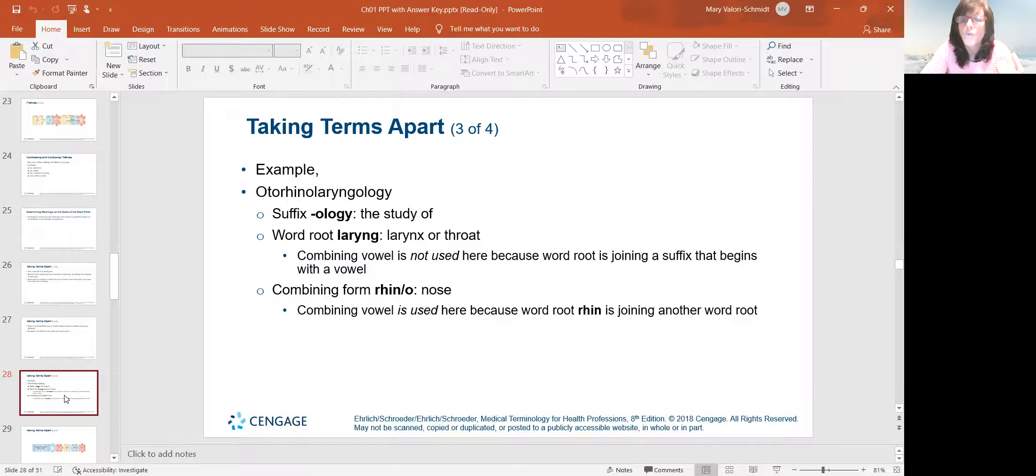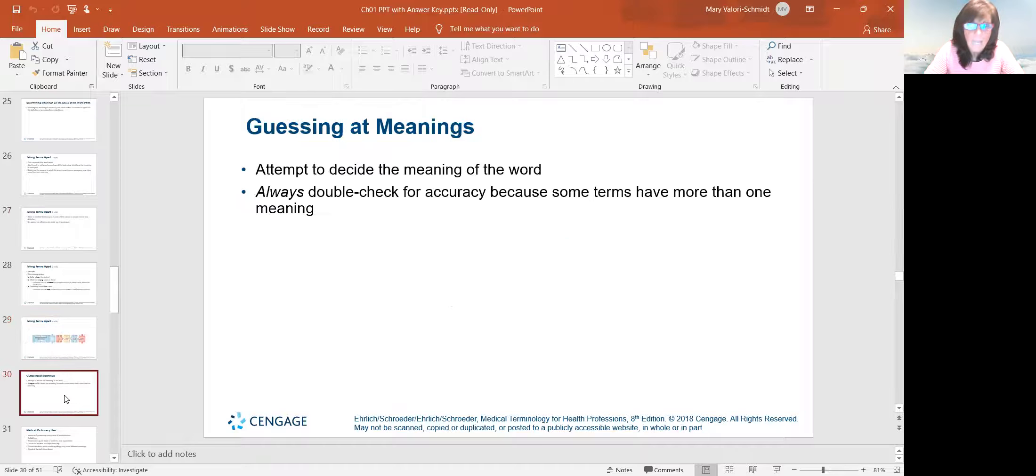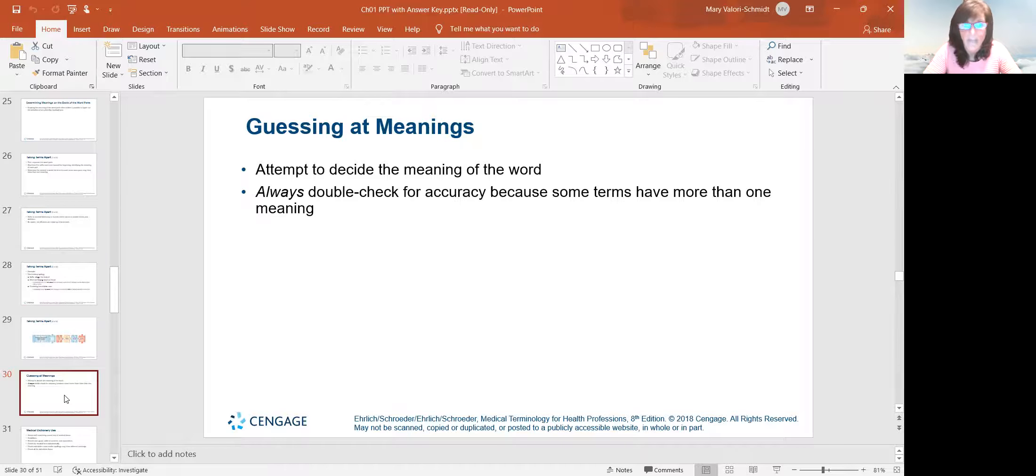And then the combining form, rhino, nose, we do need the O because the word rhino is joining another word root. We're putting two word roots together. So otorhinolaryngology. That's a mouthful.